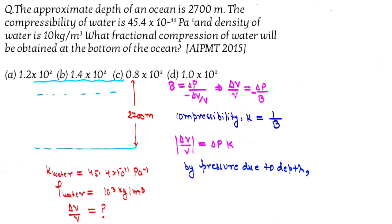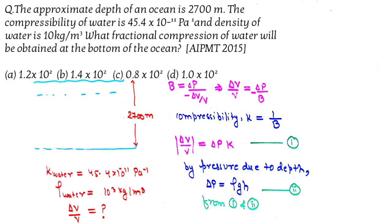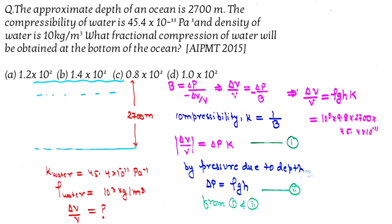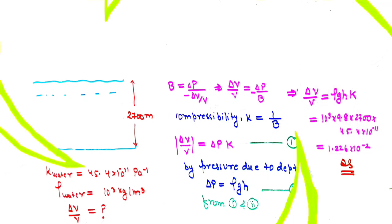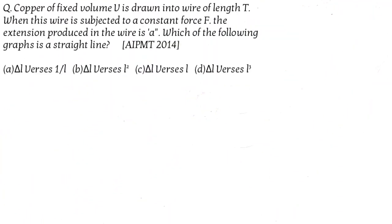From fluid mechanics, as you go to depth, delta P equals rho g h. Substituting the values — density 10 to the power 3, g is 9.81, depth is 2700 meters, and K is as given — after solving you get the result 1.226 into 10 to the power minus 2, and that is the answer.